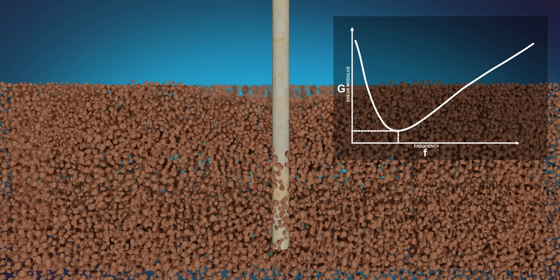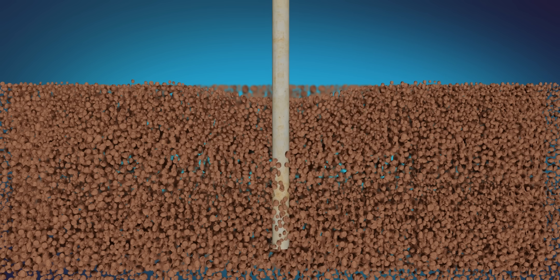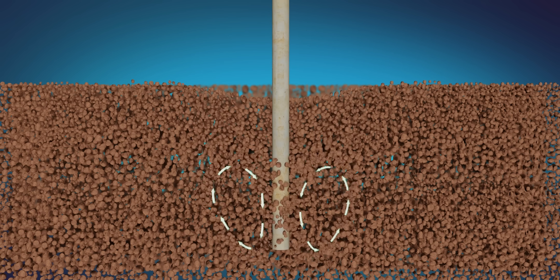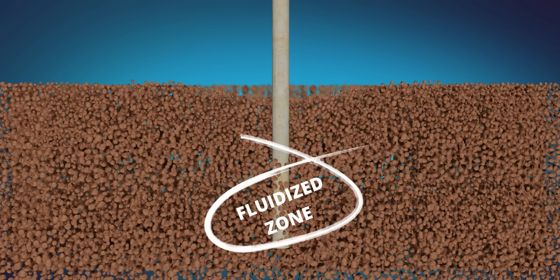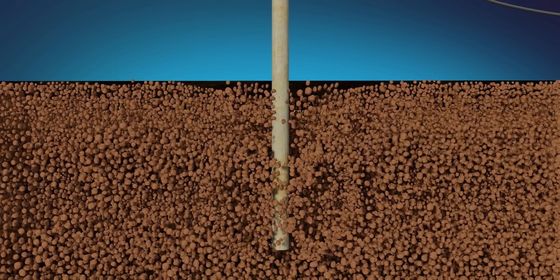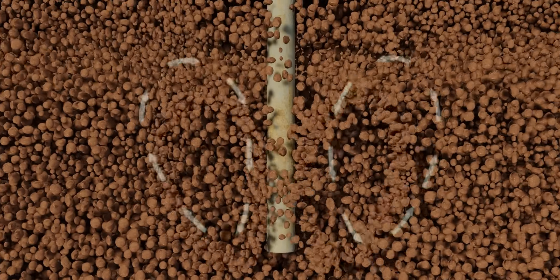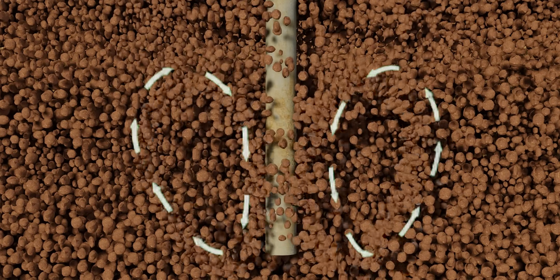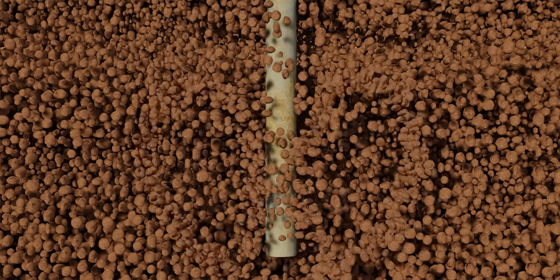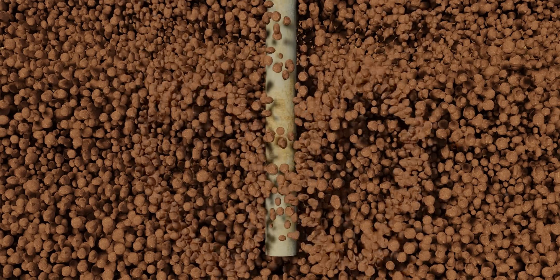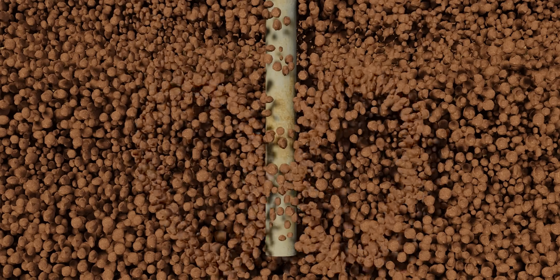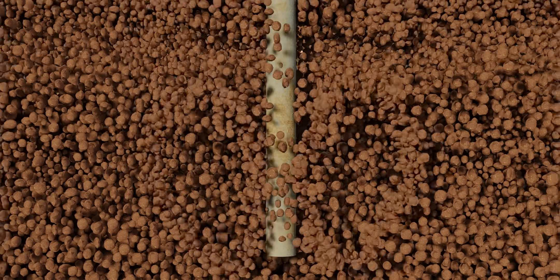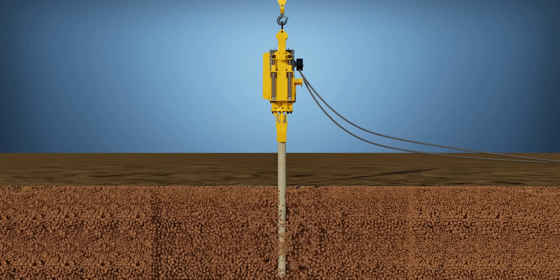If you look more closely at the soil particles, you'll notice that they're exhibiting vortices, a kind of motion similar to fluid behavior. This region is known as the fluidized zone of soil. The soil behaves exactly like a fluid due to the vibrations. This extreme low resistance is the reason why a vibratory hammer that is simply hanging on a rope is able to penetrate the soil. The weight of the vibrohammer is sufficient to penetrate into the ground in this fluidized state.